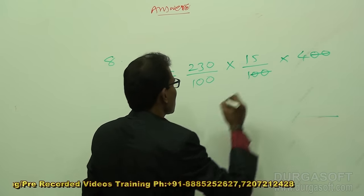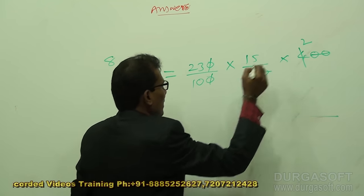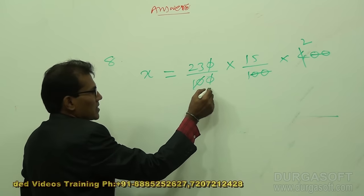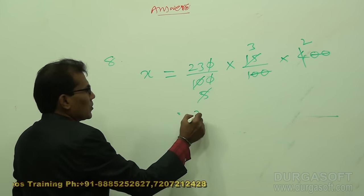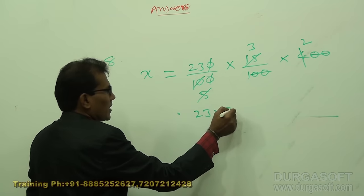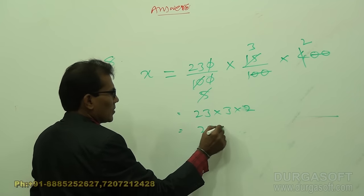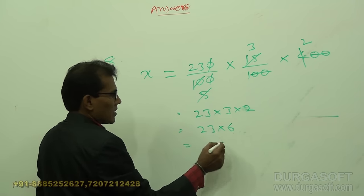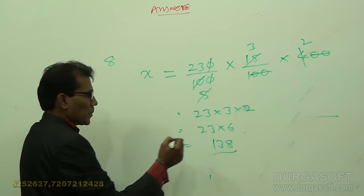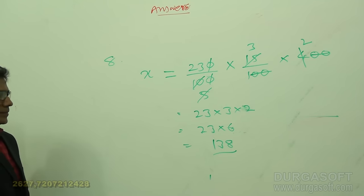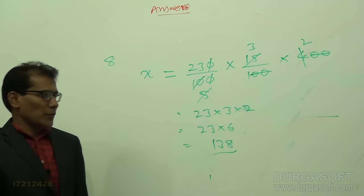Do the simplification: cancel the zeros. We get 23 times 3 times 2, which is 23 times 6. That gives 138. So 230 percent of 15 percent of 400 is 138.